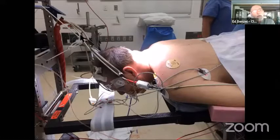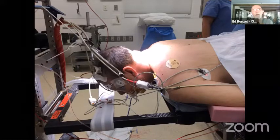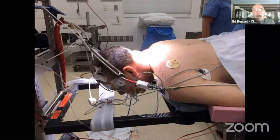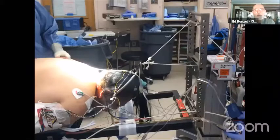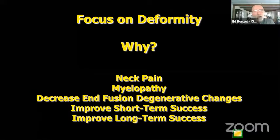Here's a patient I failed. Her myelopathy improved significantly, but she's unhappy because of persistent neck pain — I did not achieve the amount of lordosis I could have preoperatively. I urge everyone to aggressively attempt to achieve an SVA under 13-14 mm if possible. Why correct deformity? To diminish neck pain, improve myelopathy, decrease adjacent degenerative changes, and improve short- and long-term success. It is truly all about leverage.